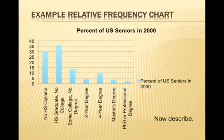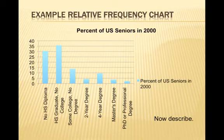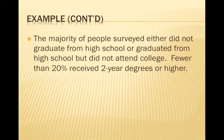Now we make the relative frequency bar chart. Make sure to label it appropriately — 'Percent of US Seniors in 2000.' On the left axis, I have 0, 5, 10, 15 up to 40 as percentages. I have a key indicating each blue bar represents percent of US seniors in 2000, with appropriate percentages as heights for each category. Each category has the same width so that changes in height due to relative frequency produce a proportional change in area, upholding the area principle.